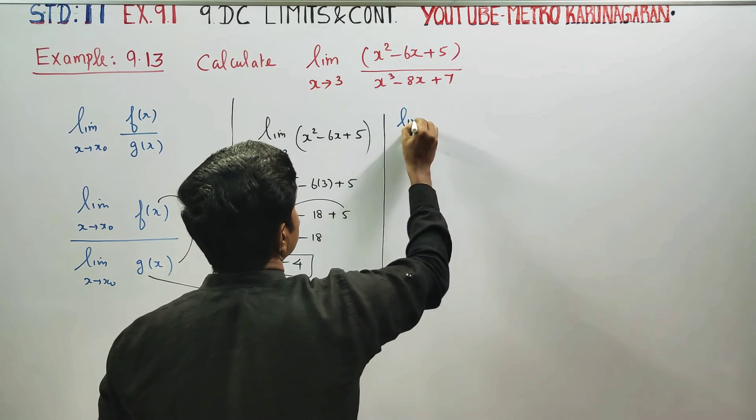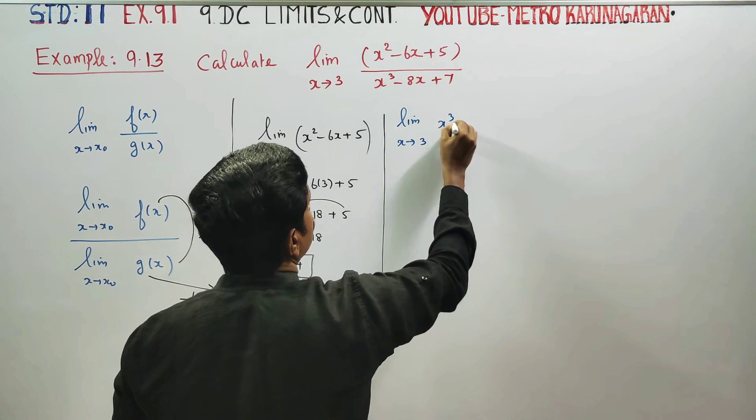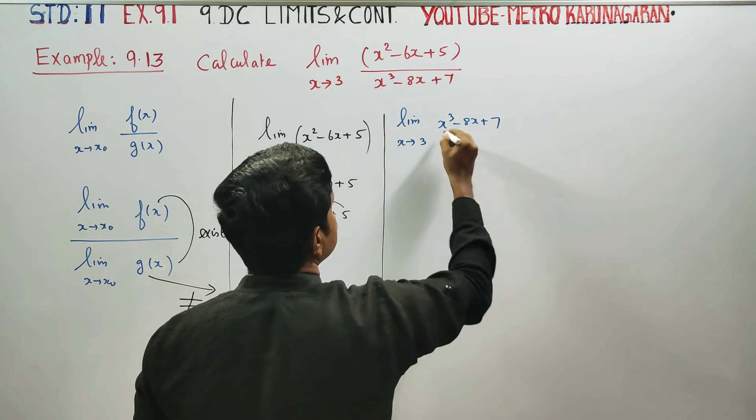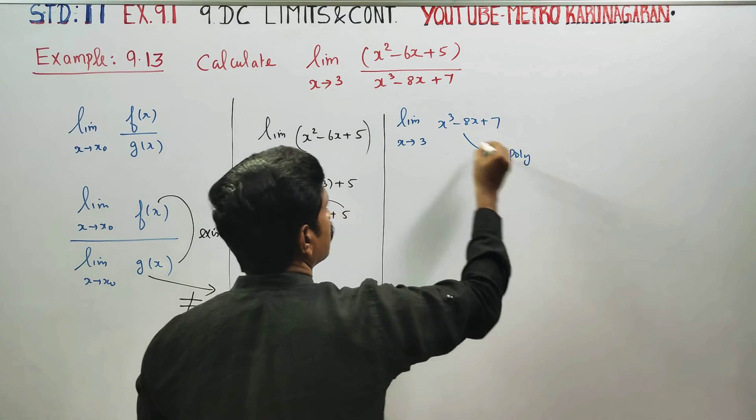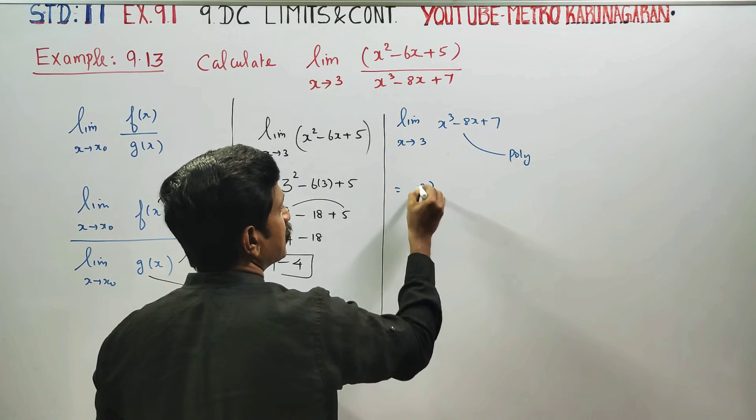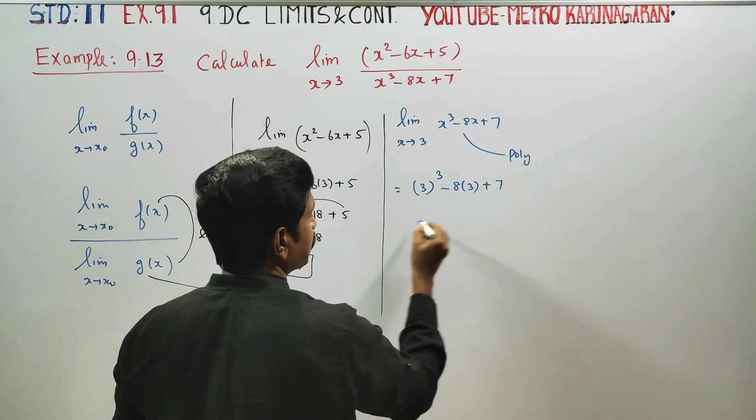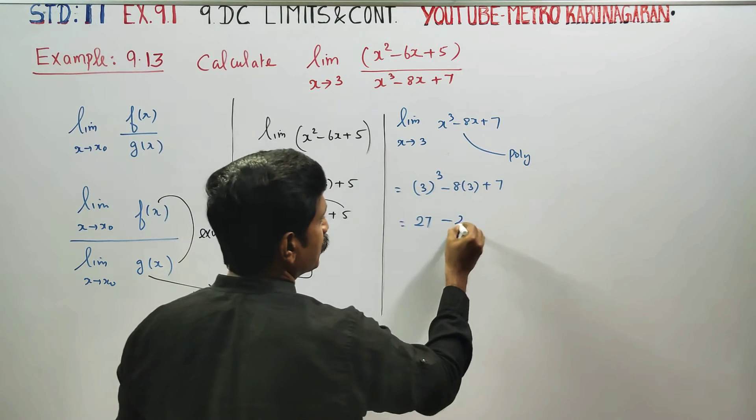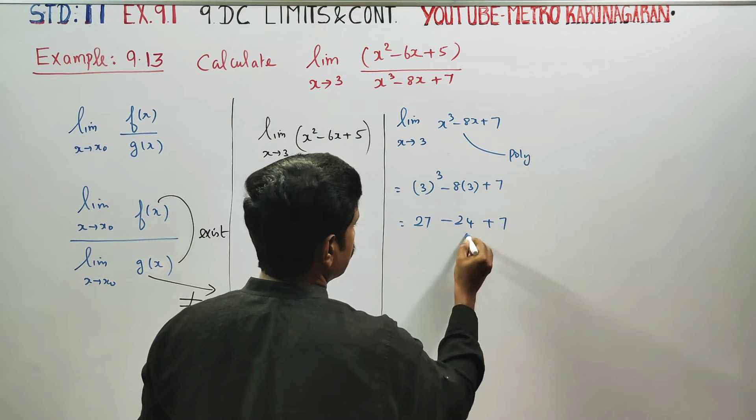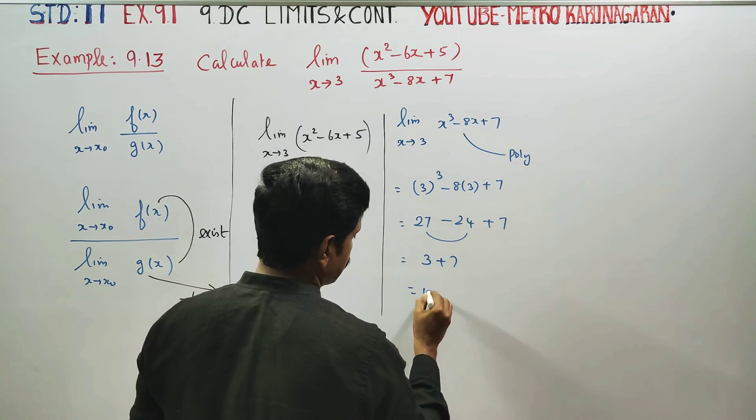Now limit as x turns to 3 of x³ - 8x + 7. It's a polynomial, so substitute 3. Three cubed minus 8×3 plus 7. 3×3 is 27, minus 24 plus 7, which is 3 plus 7. Answer is 10.